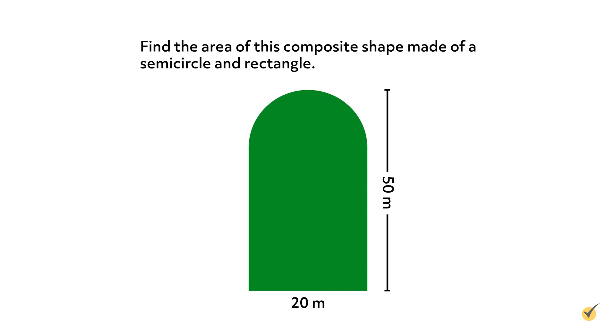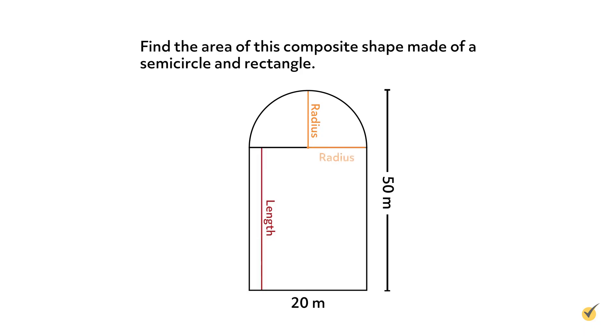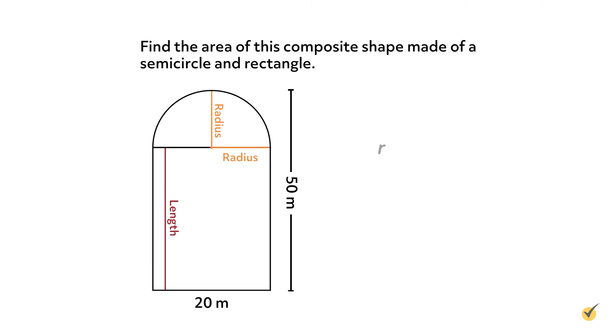Let's try a problem. Find the area of this composite shape made of a semicircle and a rectangle. We can see that our shape is 50 meters tall and 20 meters wide. What makes this tricky is that we know the width of the shape, which is the width of the rectangle, but we don't know the radius of the circle or the length of the rectangle. Looking at our diagram, we see that we could draw another radius that is horizontal. Now we can see that this radius is half the width of our shape. Since we know that the width of our shape is 20 meters, we can find the radius by dividing that by 2. So our radius is 10 meters.